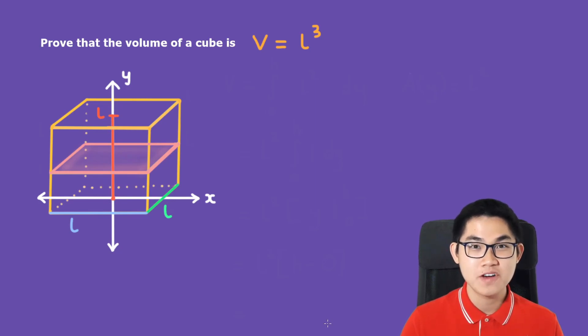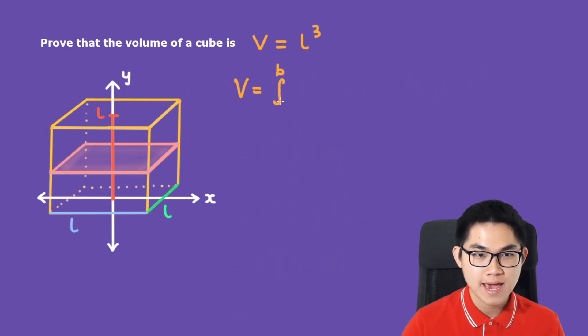Now, in order to find the volume, you need to know the volume formula. And that is basically V equals the integral from A to B of A of Y, D of Y.